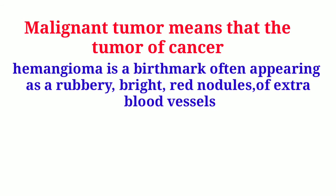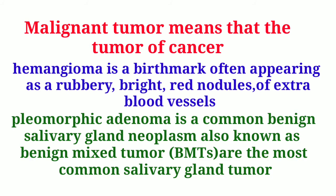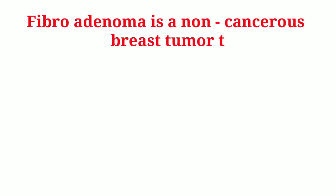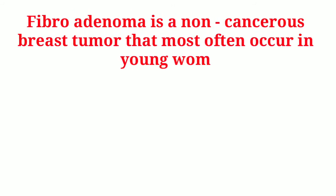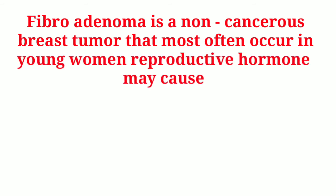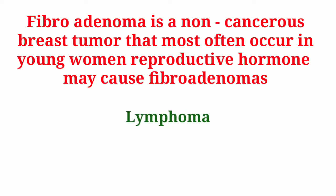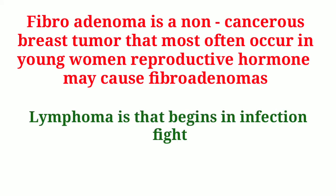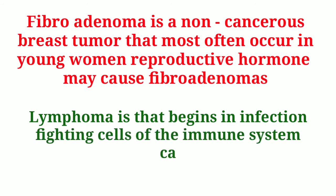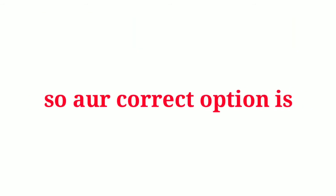We know a malignant tumor means a tumor of cancer. Hemangioma is a birthmark often appearing as a rubbery, bright red nodule of extra blood vessels. Pleomorphic adenoma is a common benign salivary gland neoplasm, also known as benign mixed tumor (BMT), the most common salivary gland tumor. Fibroadenoma is a non-cancerous breast tumor most often occurring in young women. Lymphoma is a cancer beginning in infection-fighting cells of the immune system called lymphocytes. So our correct option is Option D: Lymphoma.